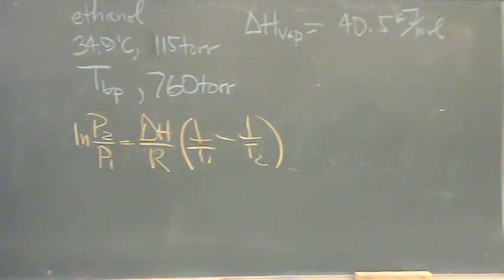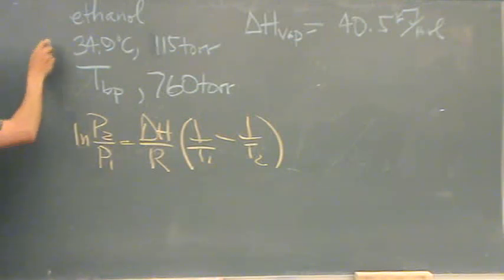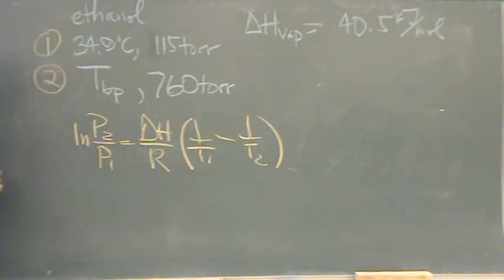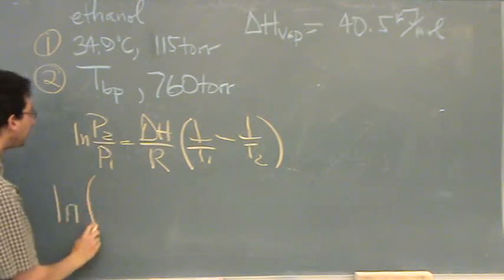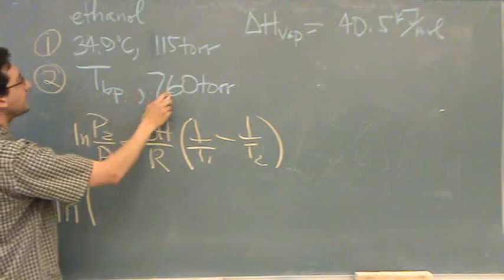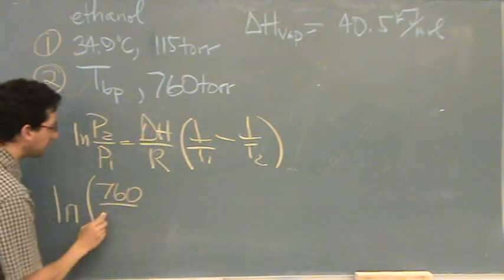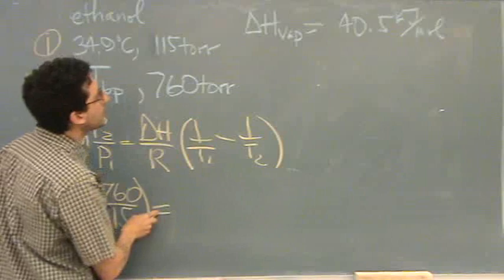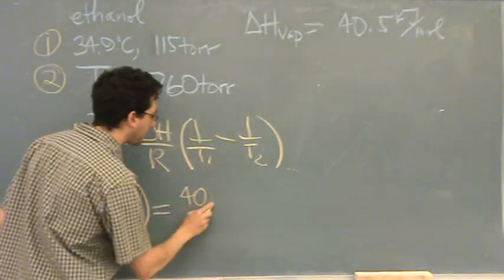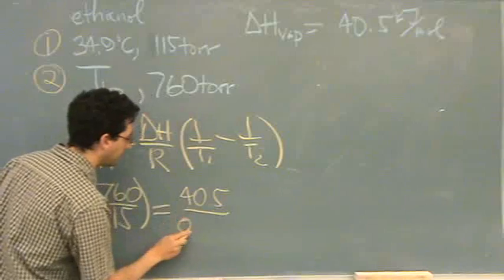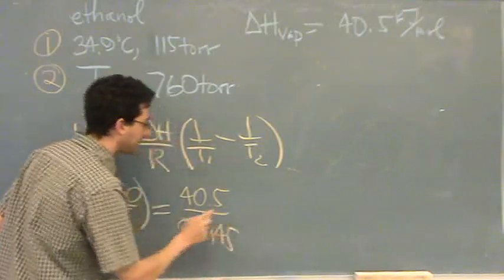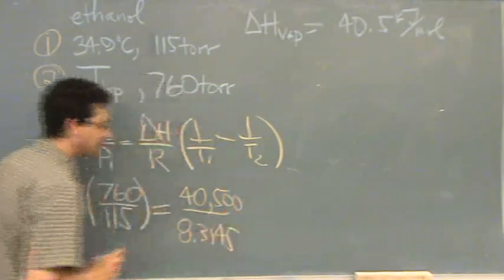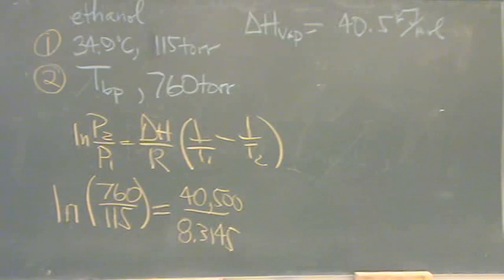Now let's plug in everything. Which one do you want to call 1 — the top or the bottom? It really doesn't matter. Top we'll call 1, bottom we'll call 2 — you'll see it won't affect your calculations at all. Natural log of P2, that's going to be 760, over P1, 115. Just make sure these are in the same units. Equals delta H, 40.5 — what's going to be the problem with that? It's in kilojoules. Always think about that when you've got delta H, so just multiply by 1,000: 40,500 joules per mole.